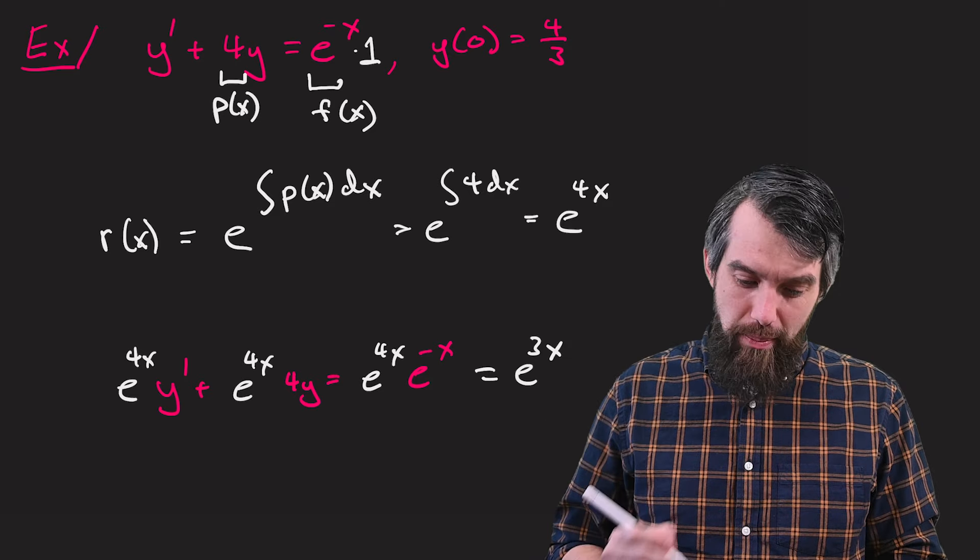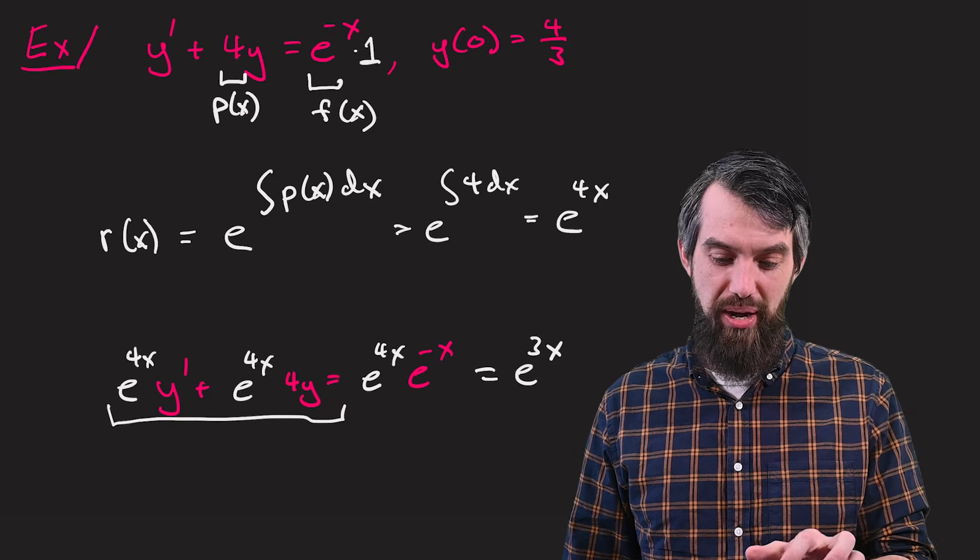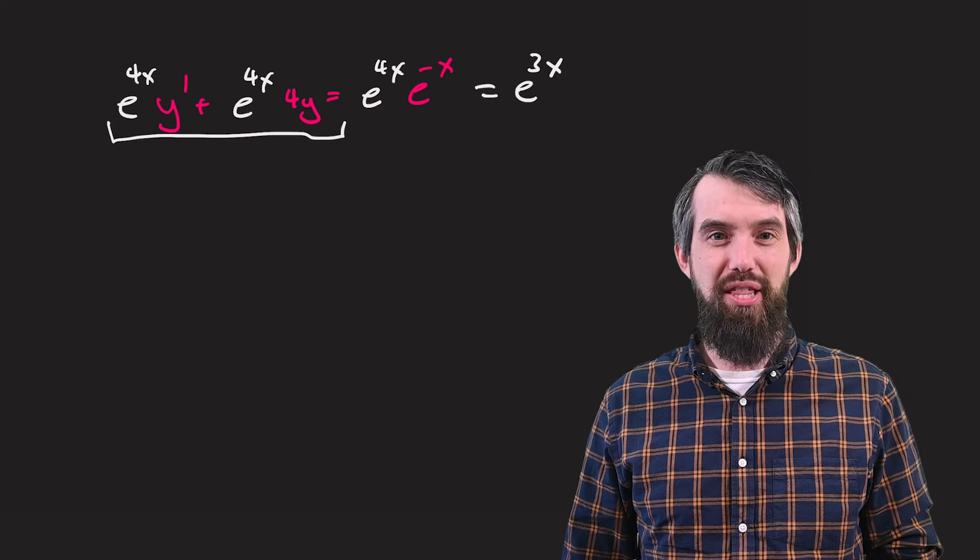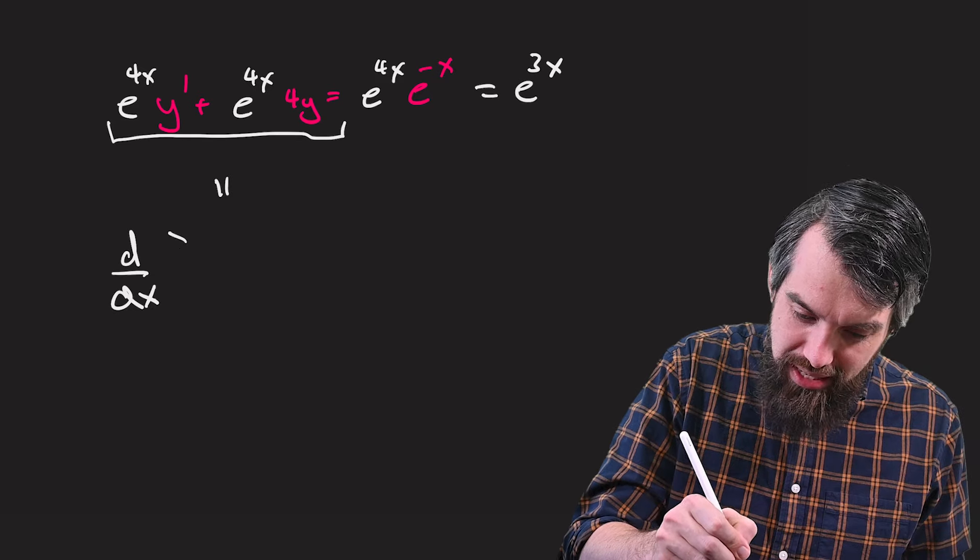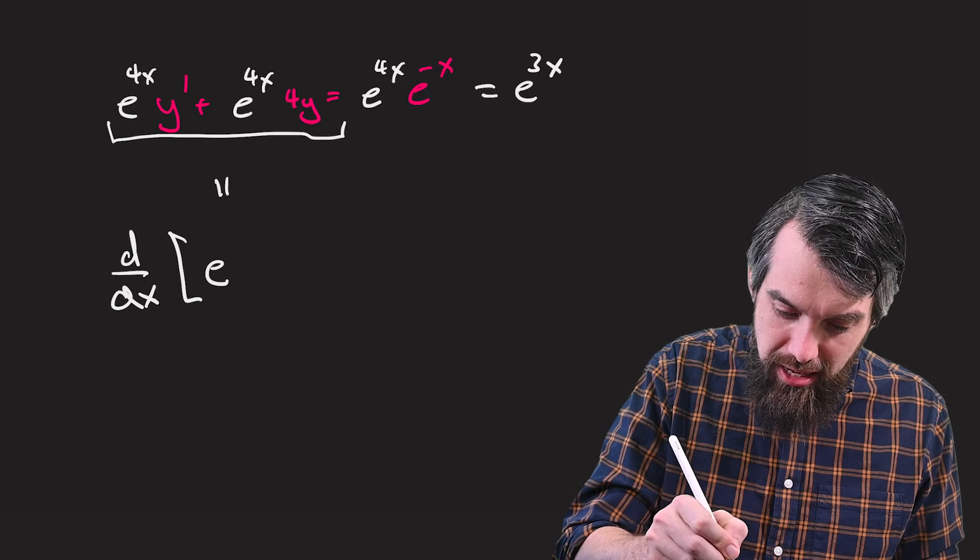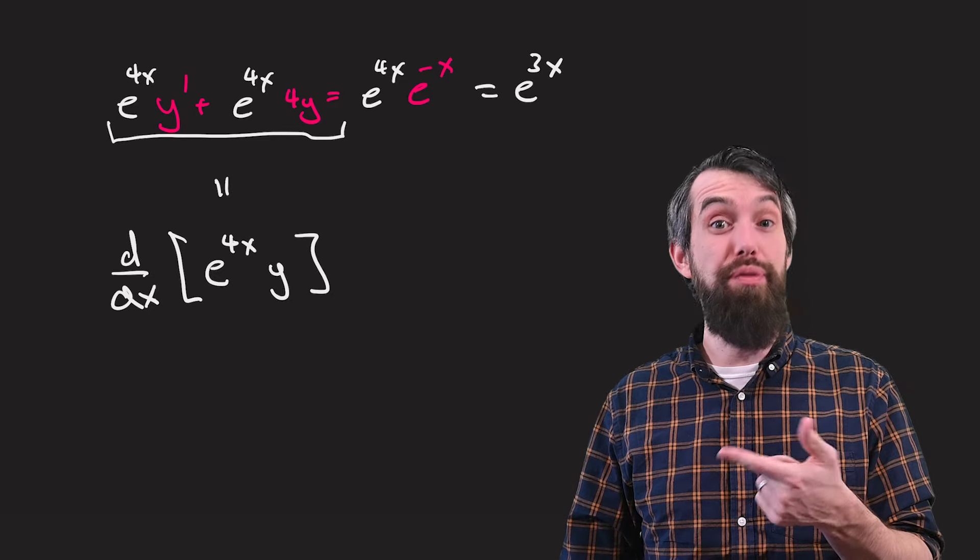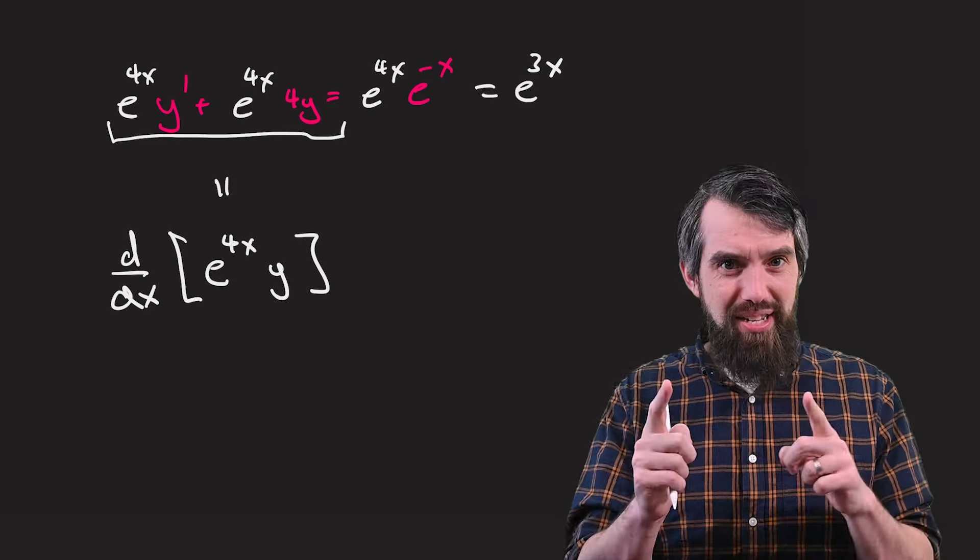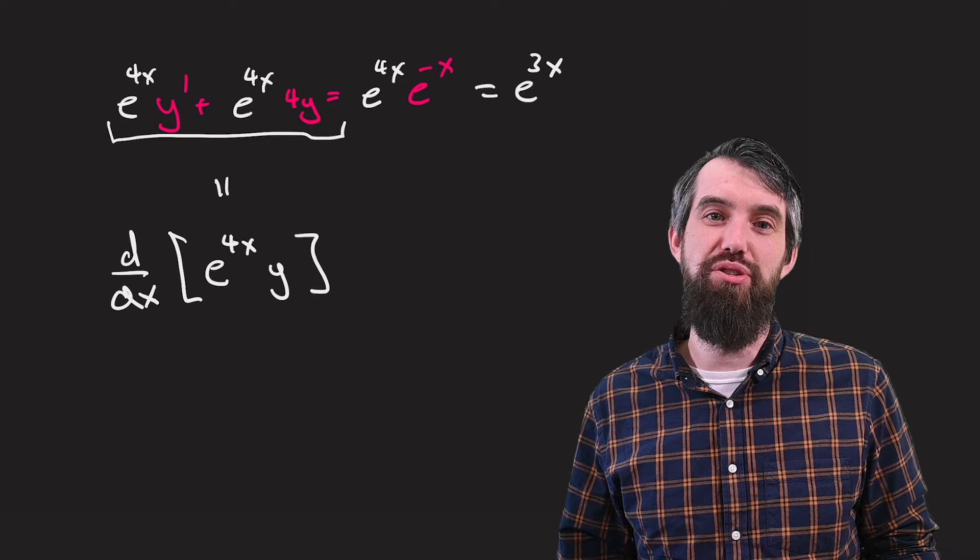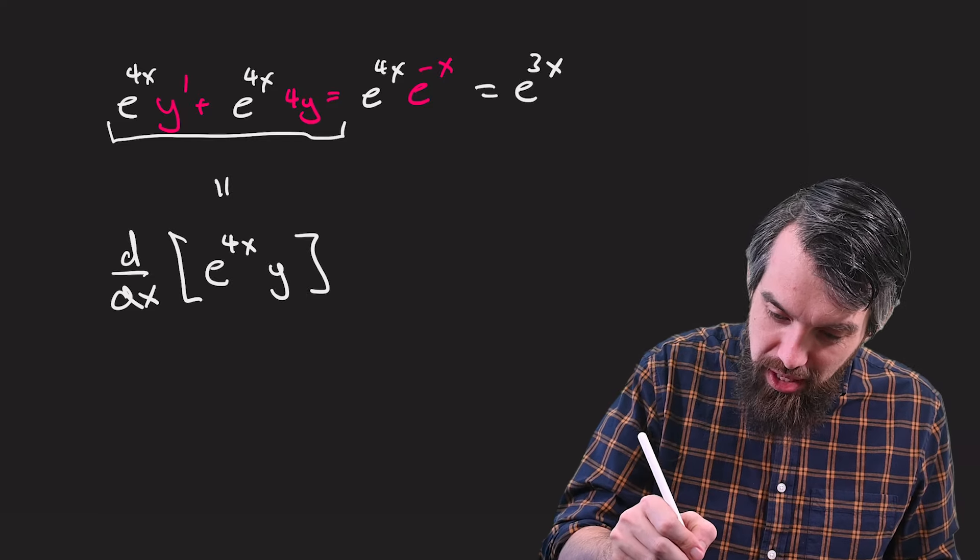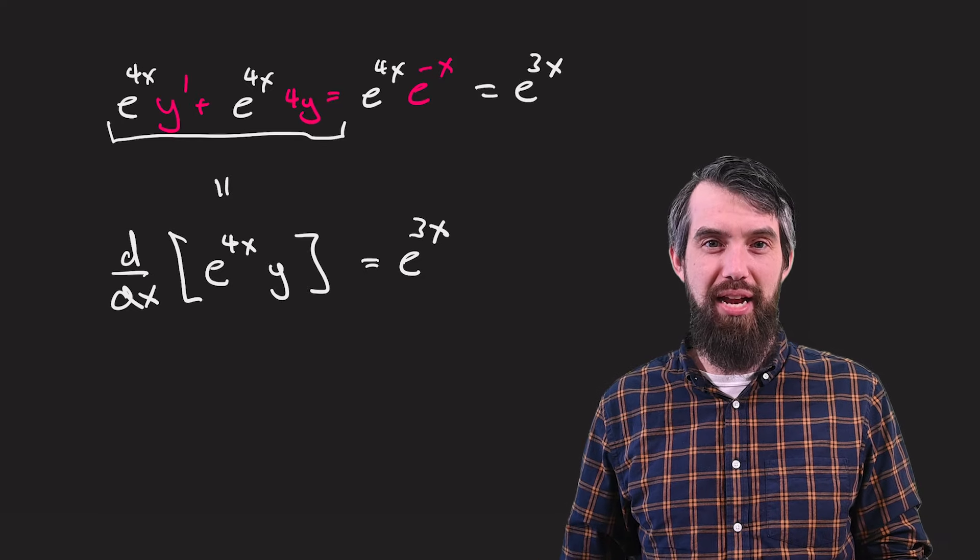Now, the next step is to simplify the left-hand side, and this is where it gets kind of interesting. I'll notice that the following is true. This is the same thing as the derivative with respect to x of e to the 4x multiplied by y. And you can verify by the product rule that you'd get exactly that. And indeed, when we introduced this method of integrating factors, we defined the integrating factors so that this would always be true.